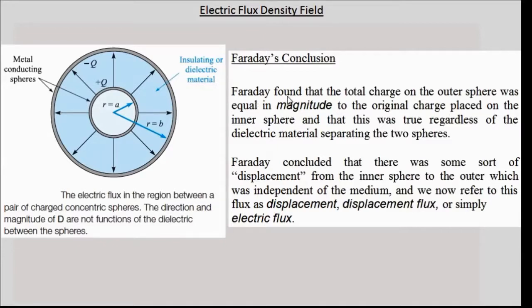Faraday found that the total charge in the outer sphere was equal in magnitude to the original charge placed on the inner sphere, but opposite in sign. The inner sphere had a charge of plus Q, and the outer hemispherical cups got a charge of minus Q. The charge of sign is reversed, but the magnitude being the same.